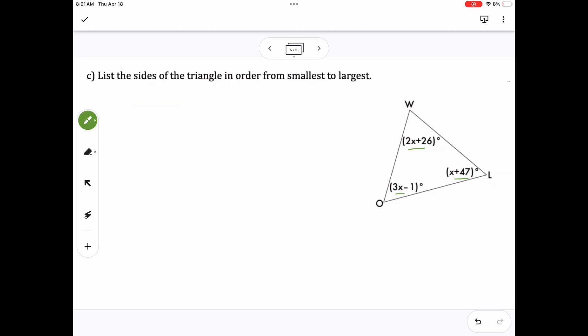Back to C, we're looking at listing the sides of the triangle in order from smallest to largest. Here they give us all expressions. So same idea as what we did with A, we're setting up an equation where all the angles add up to 180 degrees, and I'm plugging in what I know for each angle, which is 2X plus 26, 3X minus 1, and X plus 47.